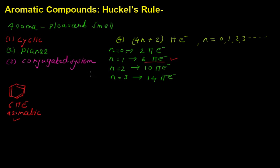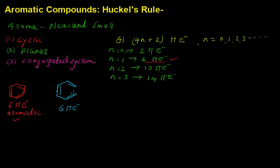Let us take another example — a compound with 3 double bonds, giving 6 pi electrons. Checking the conditions: this compound is not cyclic in nature. Even though it contains 6 pi electrons, because it is not cyclic, this compound is not aromatic.